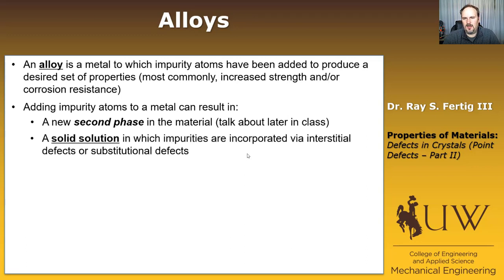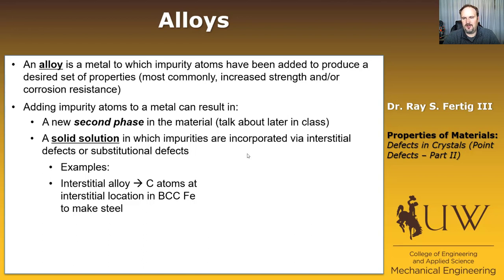The other state that it could result in is what's called a solid solution, and all that is is where the impurities are going to be incorporated via interstitial defects or substitutional defects. So I can give you some examples. One I already did, an interstitial alloy is how we make steel. We put carbon atoms at an interstitial location in BCC iron to make steel.